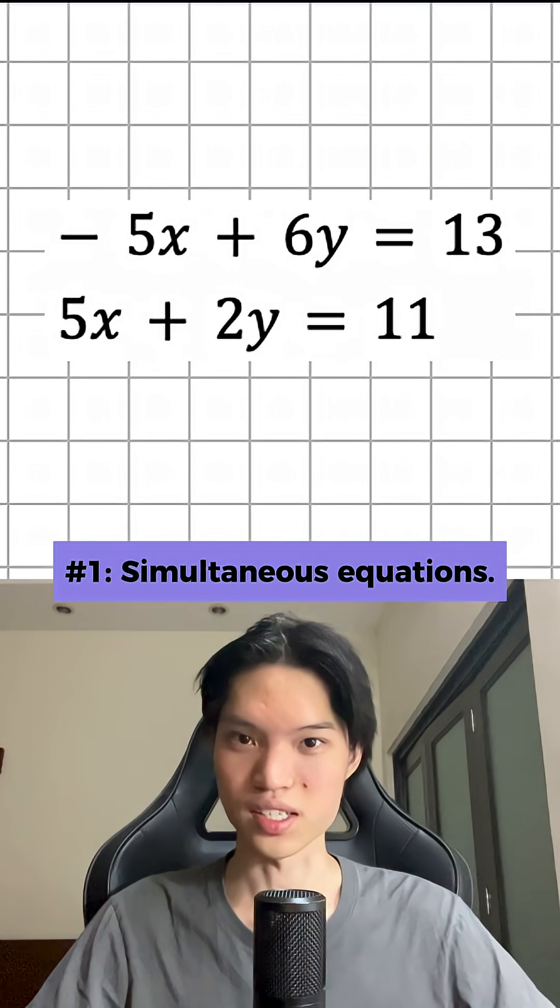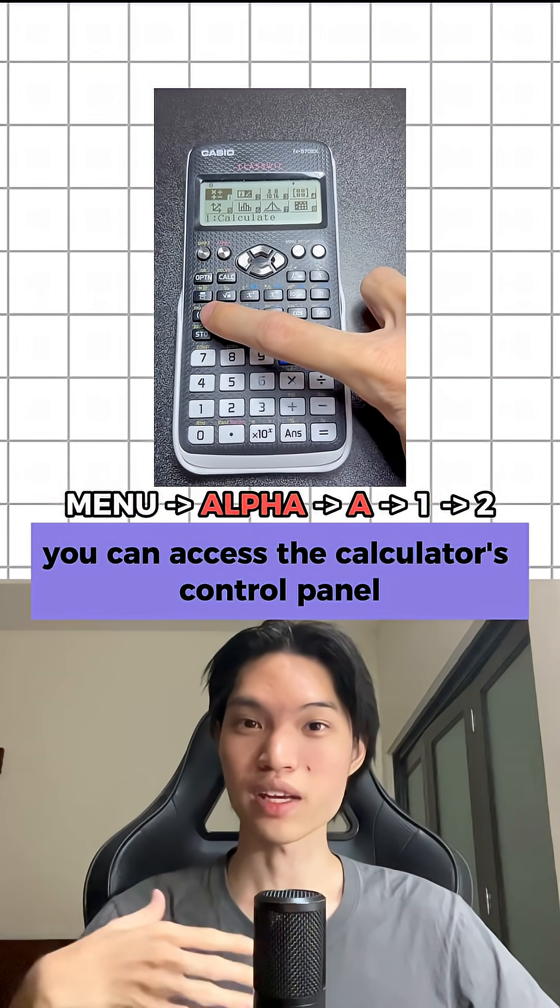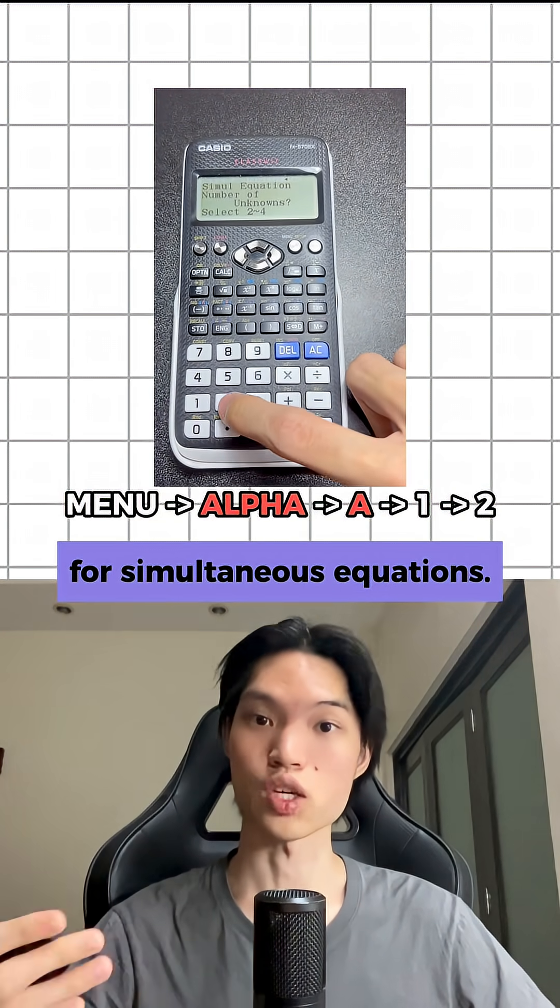Number one, simultaneous equations. By pressing these buttons in order, you can access the calculator's control panel for simultaneous equations.